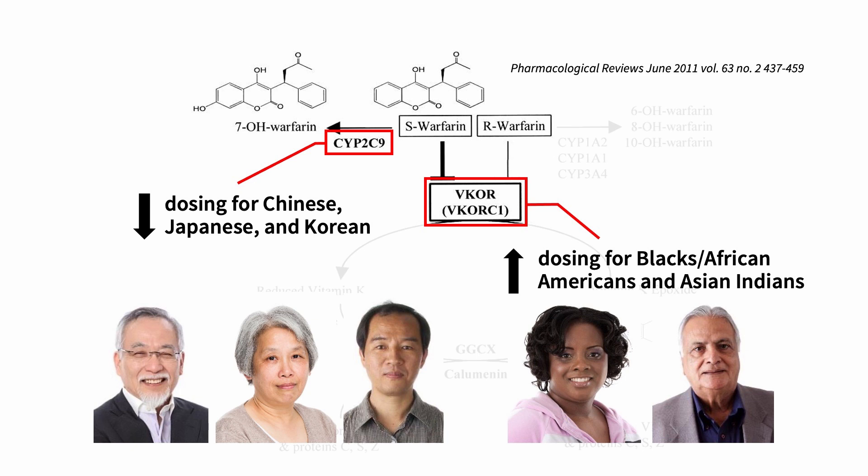Now let's look at pharmacogenetic differences. Warfarin is a drug commonly used to thin the blood and prevent clotting. Differences in the cytochrome P450 system — specifically the CYP2C9 enzyme — recommend decreased dosing for Chinese, Japanese, and Korean Americans. However, differences in VKORC1 recommend increased dosing for Blacks, African Americans, and Asian Indians. There is quite a divergence in dosing among Asian subgroups, and we need to understand these pharmacogenetic differences to enable precision prescribing for all groups.